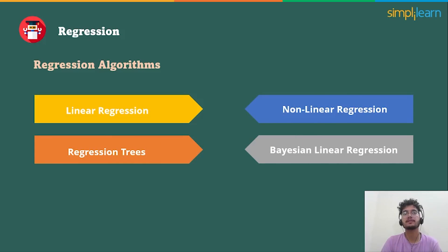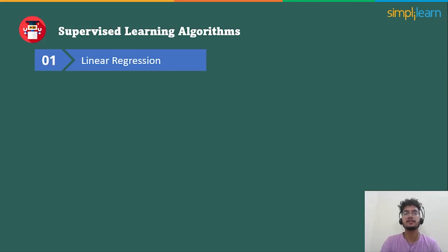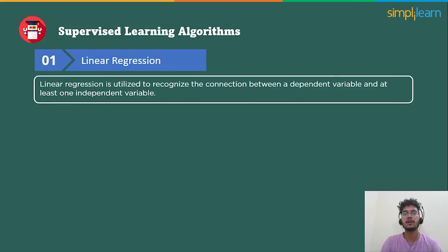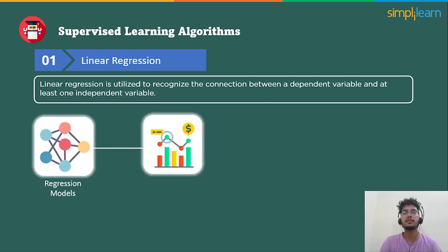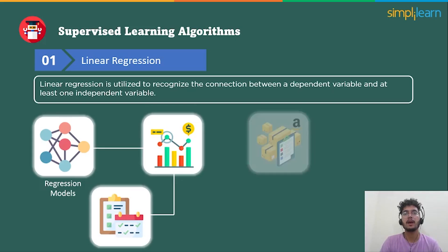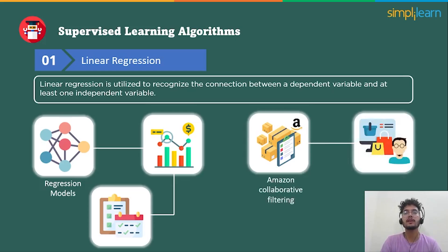Let's look at algorithms in supervised machine learning. An algorithm is a set of well-defined instructions to solve a particular problem — it takes a bunch of inputs and delivers the ideal results. Linear regression is utilized to recognize the connection between a dependent variable and at least one independent variable, and is commonly used to make forecasts about future results. Companies frequently use linear regression models to predict future sales, useful for planning and arranging. Algorithms like Amazon's product-to-product collaborative filtering are used to predict what clients will purchase given their past purchase history.